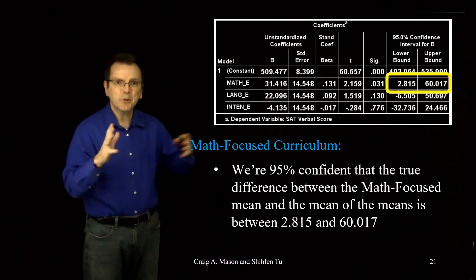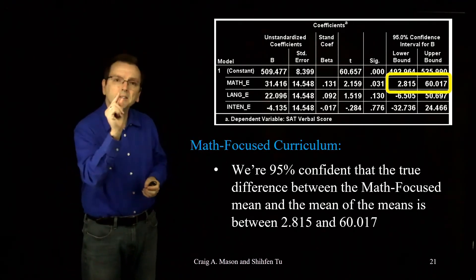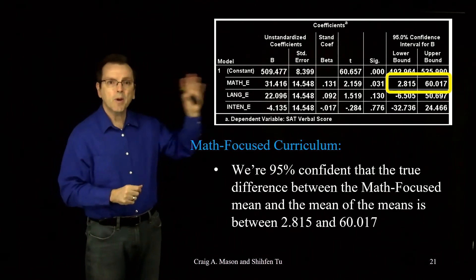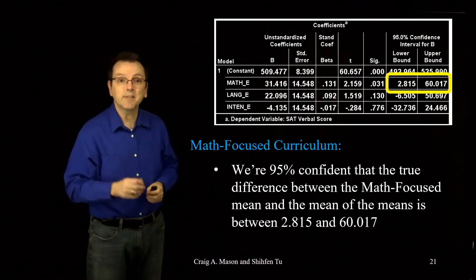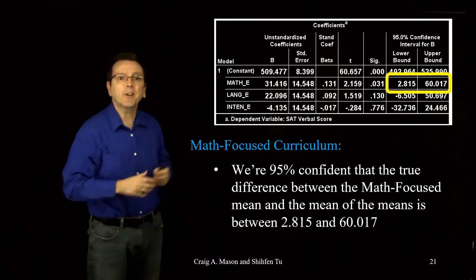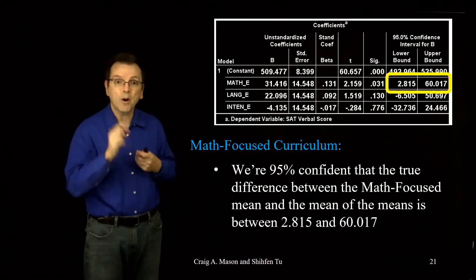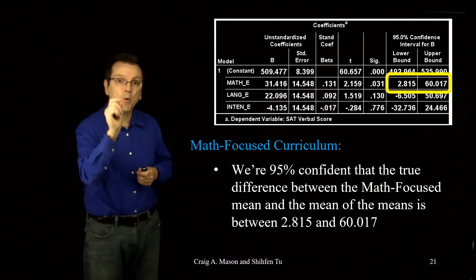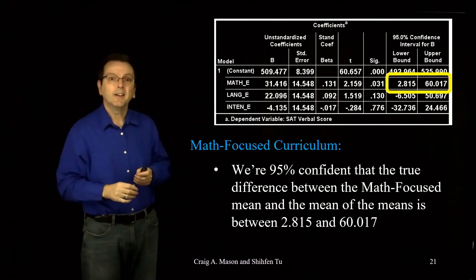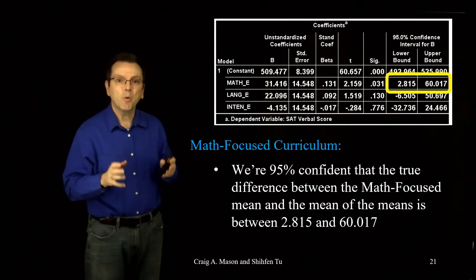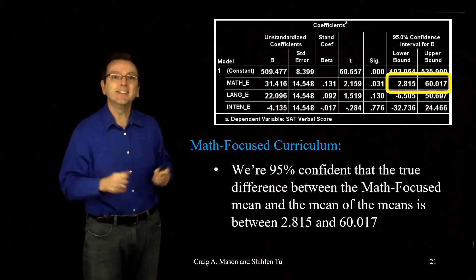That's a pretty big range of scores — from only a small difference of 2.815 all the way up to slightly more than 60. That's what's nice about confidence intervals: it suggests that our point estimate of 31.416 may be a little imprecise, not as exact as 31.416 may sound.